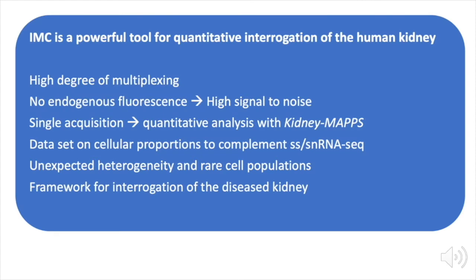Imaging mass cytometry is a powerful tool for quantitative interrogation of scarce human kidney tissue. We have adapted this technology and an associated machine learning analysis pipeline to develop a quantitative human kidney atlas. We believe this dataset has great potential utility for informing single-cell and single-nuclear RNA-seq approaches for kidney interrogation. In addition to defining unexpected tubular heterogeneity and rare cell populations, this work has created the framework for a quantitative interrogation of diseased kidney tissue, work that is currently ongoing in the Cantley Lab.